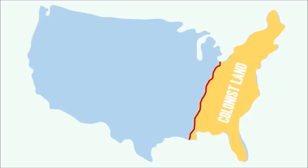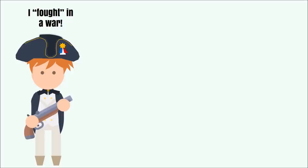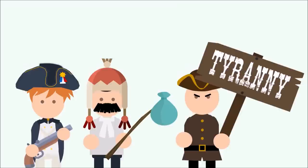This proclamation drew a line down the crest of the Appalachian Mountains. Colonists were meant to stay to the east of it, and Native Americans were meant to stay to the west of it. Seemed pretty simple, right? Except it wasn't. The colonists, who had just gained this new land to settle and were used to going wherever they wanted, called this an act of tyranny.